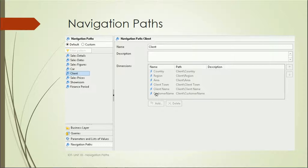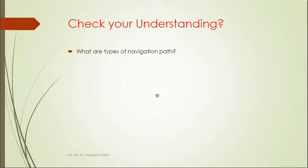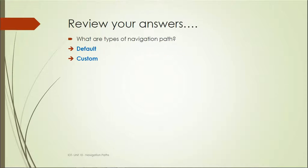To summarize, there are just two types of navigation paths: default and custom. A navigation path is essentially an ordered list of values available as a hierarchy to report users. I hope you understood navigation paths. If you have any questions, please put them in the comment section and please subscribe to my channel so you get notified about my next video. Thank you for watching.